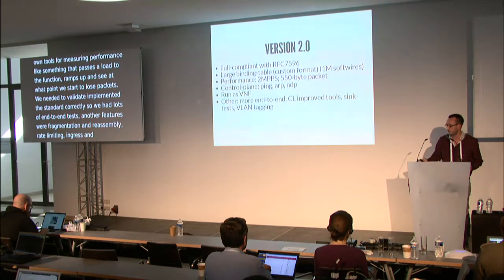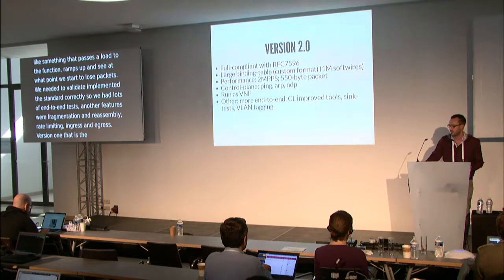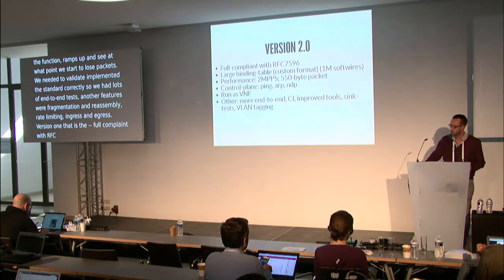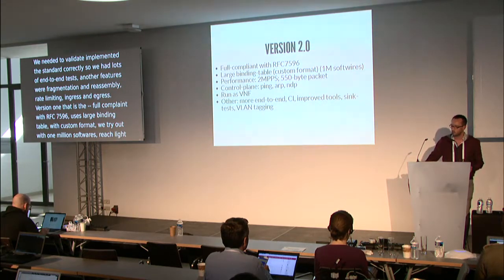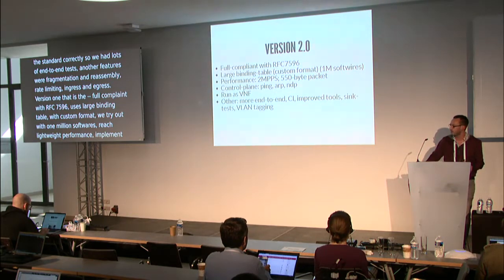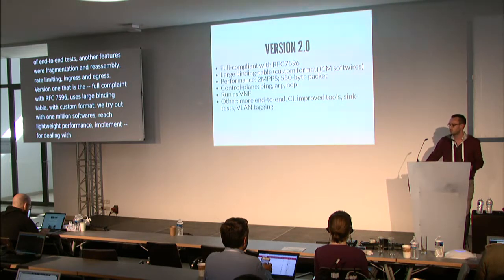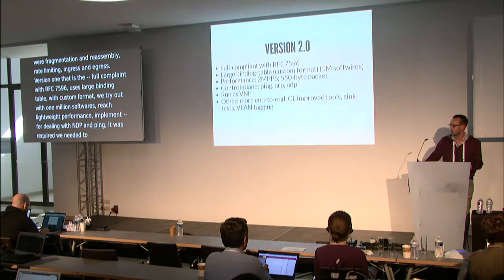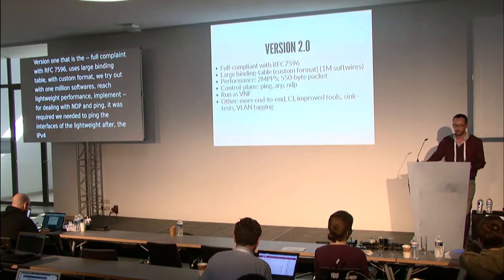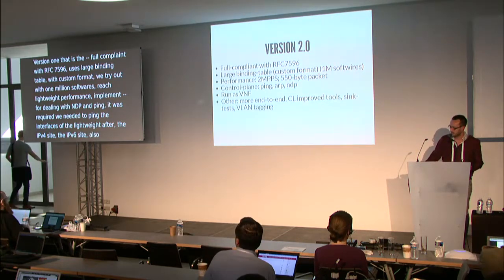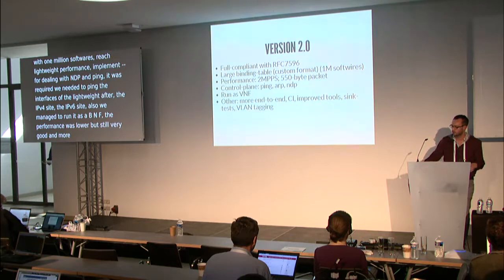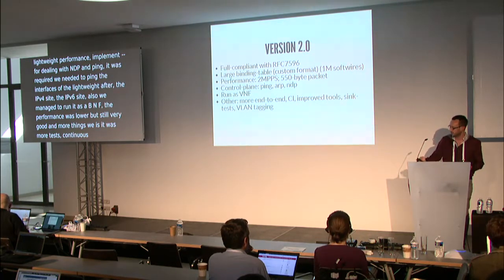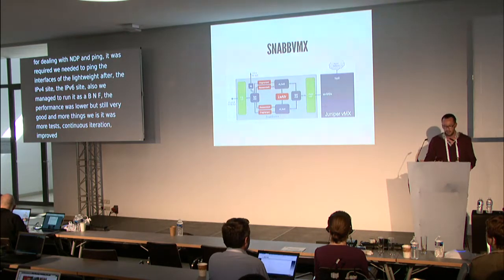Version 2 is the production-ready version. It was fully compliant with RFC 7596, uses large binding tables still in a custom format, and we tested with 1 million softwires. We reached line-rate performance on a 10G NIC card. We also implemented some control plane: Snabb packet libraries for handling ARP packets, NDP, and ping. It was required to ping the interfaces of the Lightweight AFTR on both the IPv4 and IPv6 sides. We also managed to run it as a VM. And this is the version that is deployed at OTE.